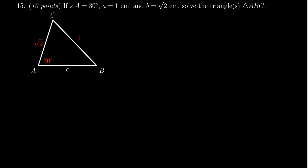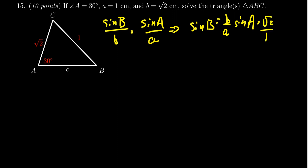So the first thing we're going to do is we're going to look for sine of B, using law of sines. So sine of B over little b is equal to sine of A over little a. This tells us that sine of B is equal to b over a times sine of A. In other words, we get little b is the square root of 2, little a is 1, and then sine of 30 degrees. Notice that sine of 30 degrees is the same thing as 1 half. So you get the square root of 2 over 2.